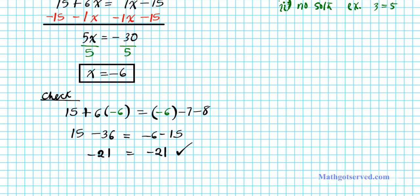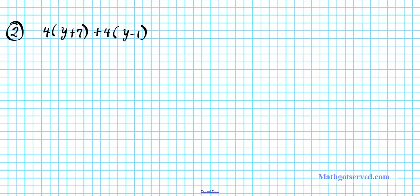Let's box our final answer and move on to question number 2. We have another multi-step equation: 4 times the quantity y plus 7, plus 4 times the quantity y minus 1, equals 8y minus 8y. This equation has variables on both sides, so there could either be one solution, infinitely many solutions, or no solutions at all, as we discussed in question number 1.